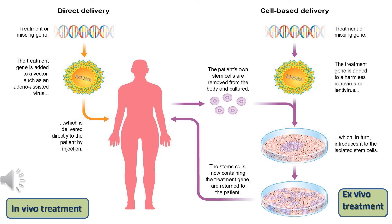Whether using a viral or non-viral vector, there are two approaches: in vivo treatment and ex vivo treatment. In vivo treatment is when the cell is inside the living organism as part of the natural system. For example, a viral vector — here using adeno-associated virus — is prepared and then administered to the organism. When it reaches the target cells, mostly the lungs or the liver, it shows its effect and produces the desired result.